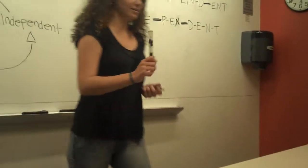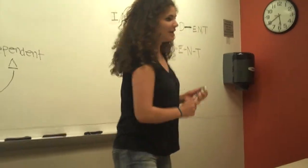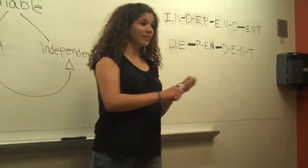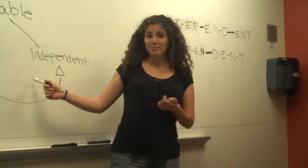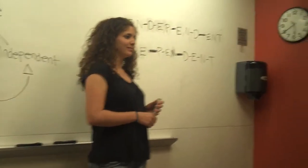So we can see that depending on how hard I push it, that determines how fast it goes across the table. So thinking about that in terms of independent and dependent variables, what would you guys say is the independent variable? How hard you push the marker. Right. So what would be the dependent variable? How fast it moves across the table. Great.